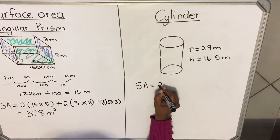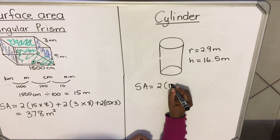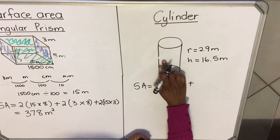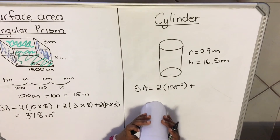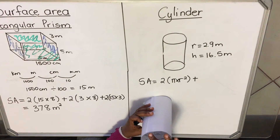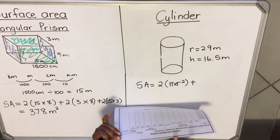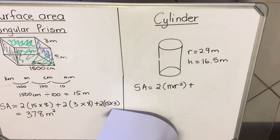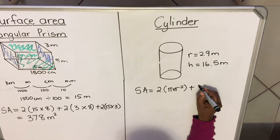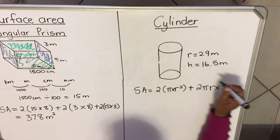The formula for surface area of a cylinder is: 2 times the area of a circle, which is pi r squared, plus the area of the rectangle. The width of that rectangle is the circumference of the circle — the circumference is the outside part of the circle. The circumference formula is 2πr, and the height of the rectangle is h. So the full formula is: SA = 2πr² + 2πr×h.